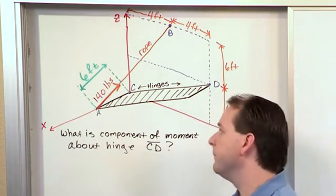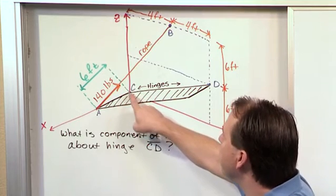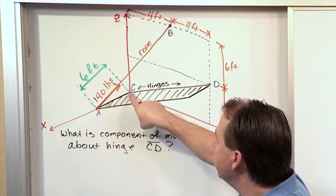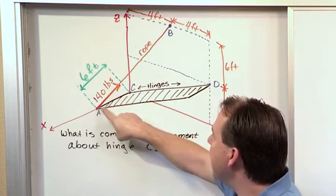So our strategy for this problem is going to be let's define an R vector going from C to A. That's going to be the point of rotation that we're interested in, C. We'll define it from C to A.